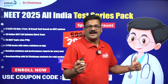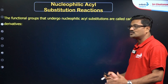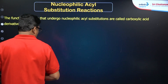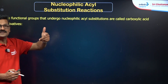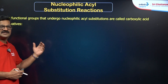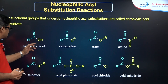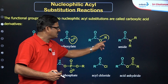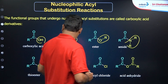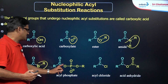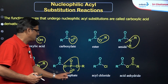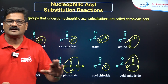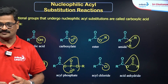Let us start with nucleophilic substitution reaction on the acyl carbon atom. The functional groups that undergo nucleophilic acyl substitution are acid derivatives: carboxylic acid, carboxylate, ester, amide, thioester, acyl phosphate, acyl chloride, and acid anhydride. These are the various functional groups considered to be acid derivatives.